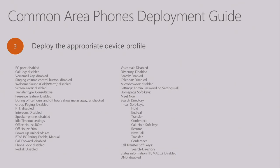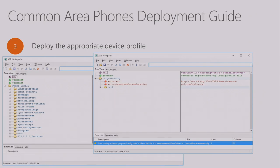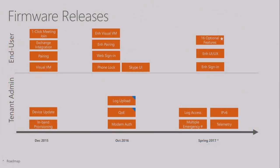Looking at the device profile: when customers want to configure a common area phone, they typically want to disable certain features — for example, disable call forwarding so no one can forward the common area phone to their personal phone, or disable Do Not Disturb so it doesn't appear on the phone. All those parameters are configurable today through the device profile — you enable or disable features and push that to the phone. The right-hand screen shows an example of auto-dial, where as soon as the phone goes off-hook it dials a specific configured number, with everything else disabled.